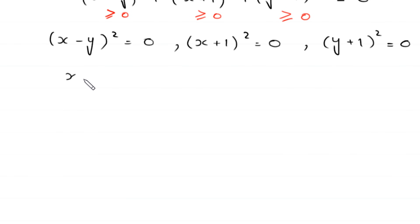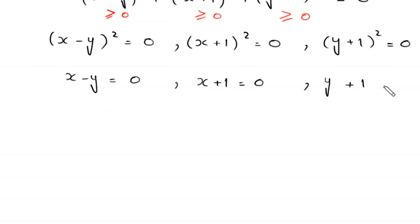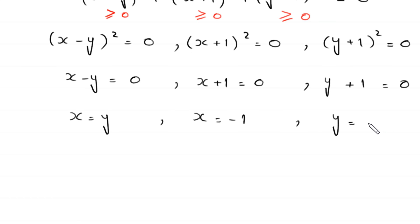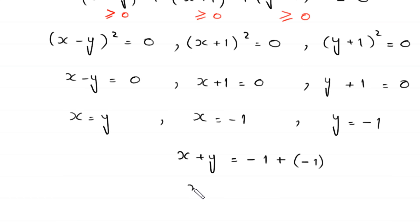So x minus y whole squared equals 0, x plus 1 whole squared equals 0, and y plus 1 whole squared equals 0. From these: x equals y, x equals negative 1, and y equals negative 1. Adding x and y, we get x plus y equals negative 1 plus negative 1, so x plus y equals negative 2.